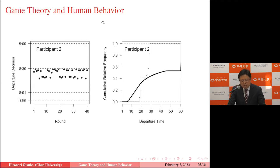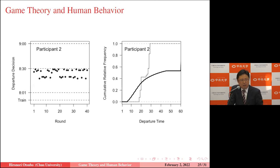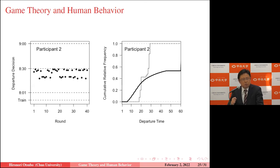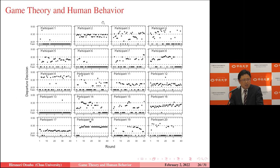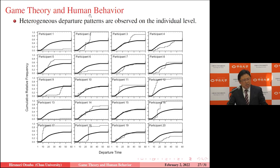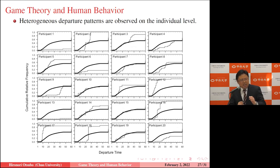Participant two always traveled by car and departed within a 10-minute window between 8:20 and 8:30 a.m., never using the train. Across all 20 participants, basically chaotic and heterogeneous departure patterns are observed at the individual level.